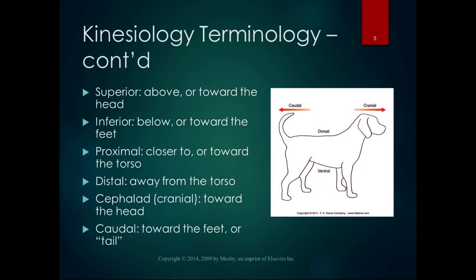Proximal and distal: proximal means closer to or toward the torso, and distal means farther away from the torso. For example, the shoulder is proximal to the elbow, the elbow is proximal to the wrist, and the wrist is distal to both the elbow and the shoulder. We're always talking about relationships.